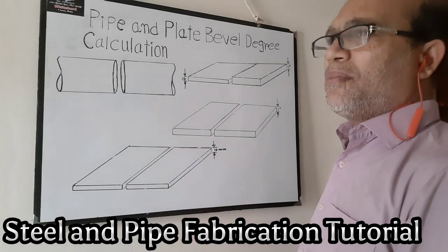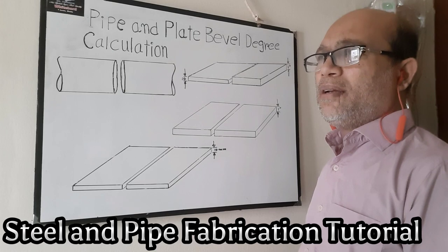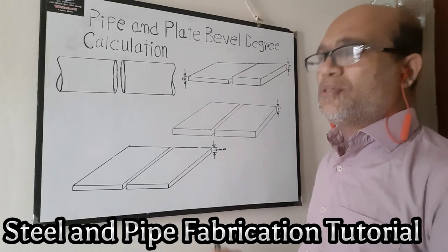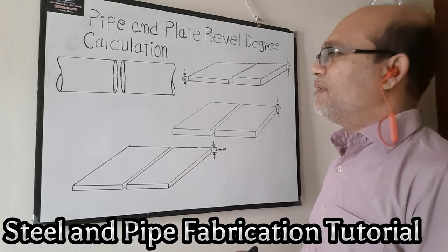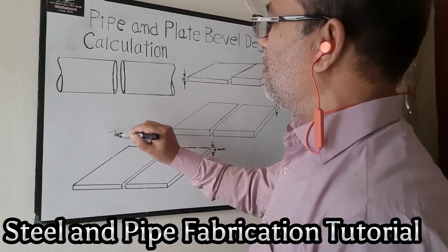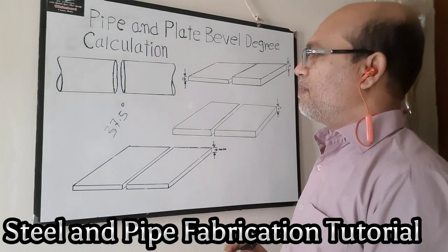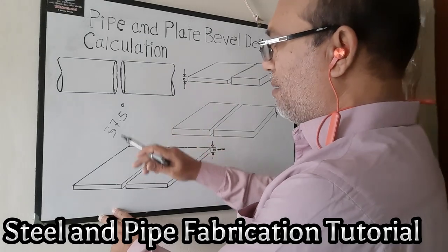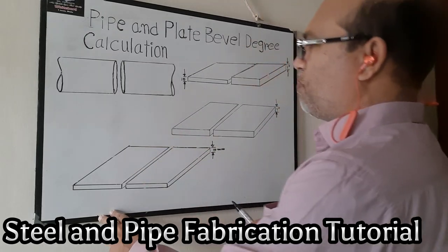Maximum time, when we fabricate the pipe, we must have a drawing to follow. If the drawing mentions 37 degrees or 37.5 degrees, we follow the drawing. The drawing specifies how many degrees to cut the bevel on the pipe. Maximum time we cut 37.5 degree bevel on every type of pipe. Before we start to fit up the pipe, we must cut a 37.5 degree bevel on the pipe face. I will try to show you the procedure.